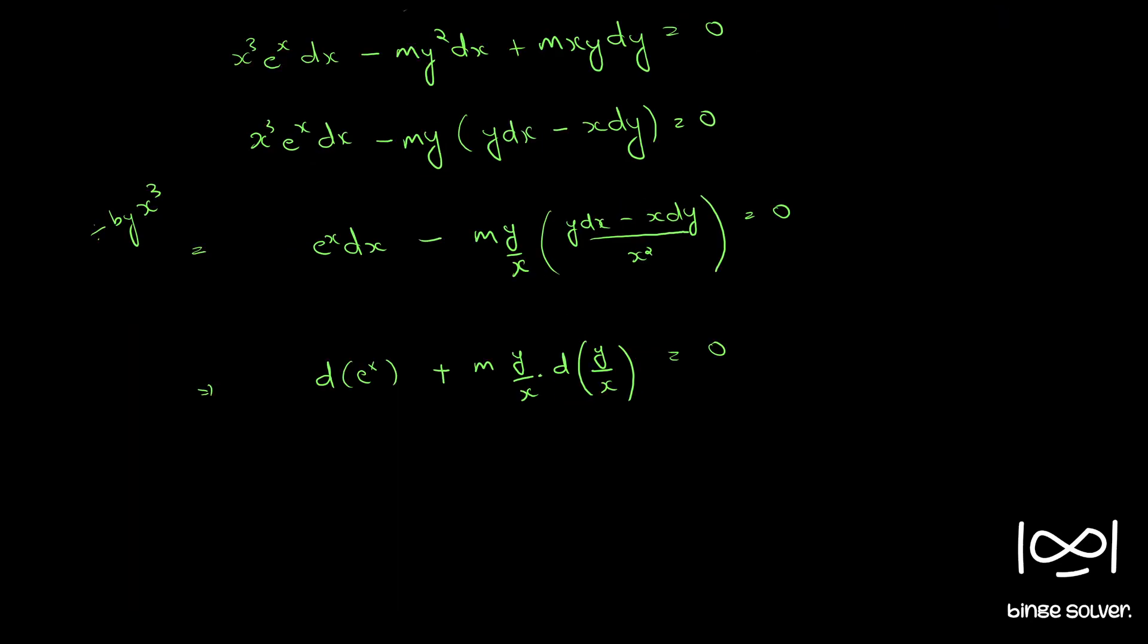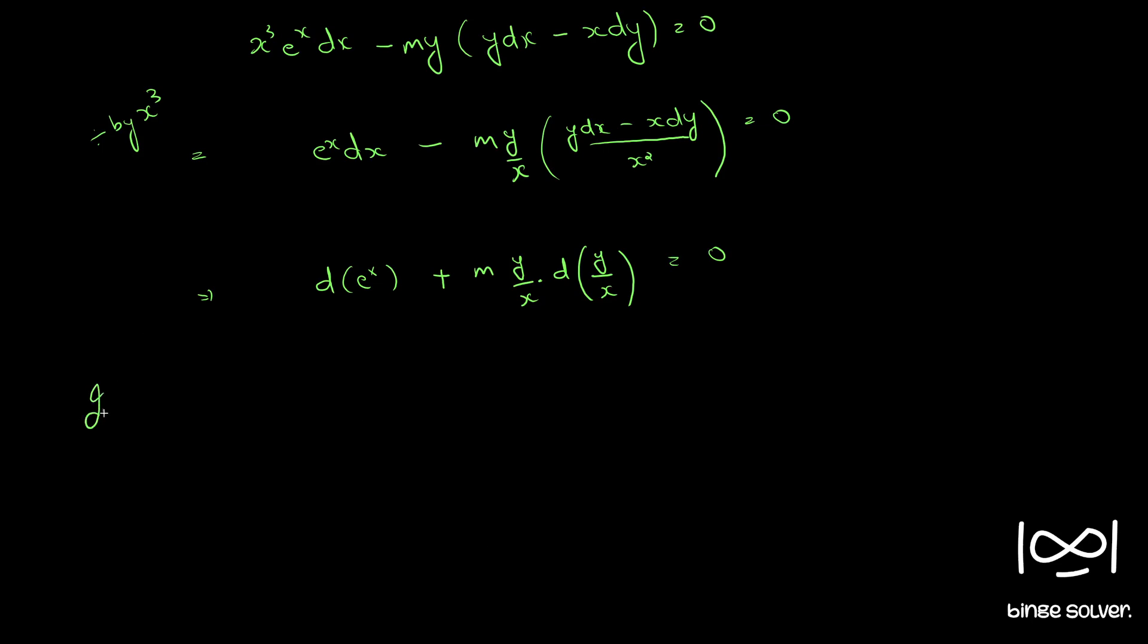Integrating, we have e raised to x plus m into, treating y by x as a single variable, y by x whole square by 2, is equal to a constant c.